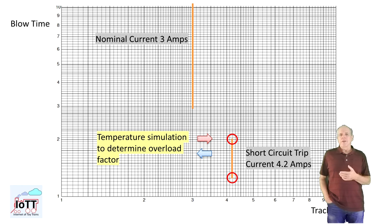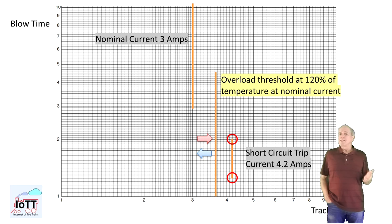If more current is drawn, the temperature increases into the overload range. For my overload protection, I allow the temperature to go up to 120% before I send the booster into overload shutdown. This allows for overloading the booster for a limited amount of time, with current amounts somewhere between nominal current and short circuit trip current. The overload percentage can be continuously calculated, monitored and indicated in the user interface.